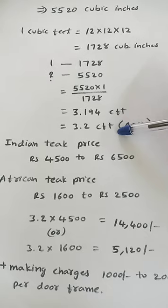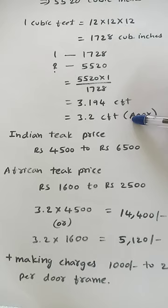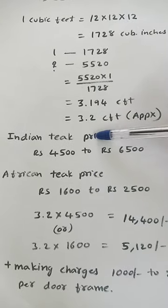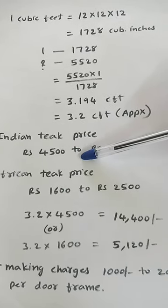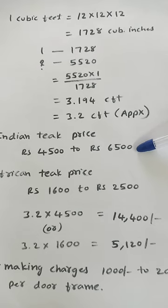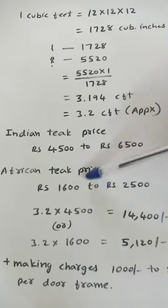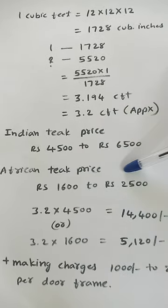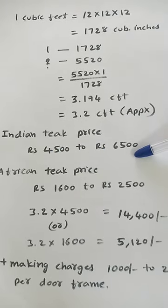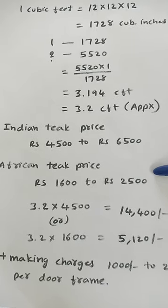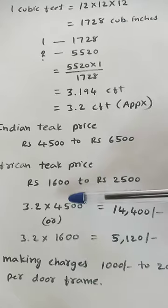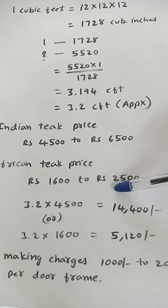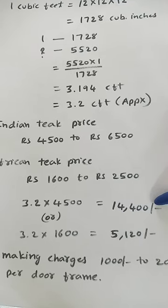Now, what is the price in the market? For main doors, people prefer Indian teak; those with a lower budget prefer African teak. Indian teak ranges from 4,500 to 6,500 rupees per cubic foot. African teak is 1,600 to 2,500 rupees per cubic foot. Prices depend on quality and the area from where it is procured. For Indian teak: 3.2 CFT × 4,500 = 14,400 rupees — this is the wood cost only.